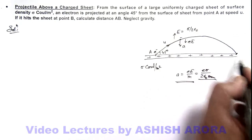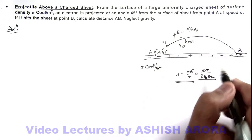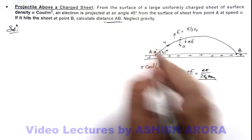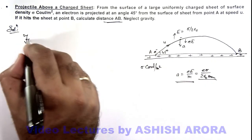Which completes the projectile and hits the sheet at point B. In this situation, we are required to calculate the distance AB if this angle is 45 degrees. We know well that for a projectile...